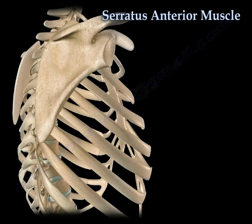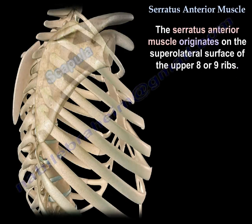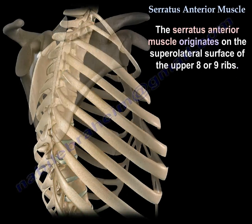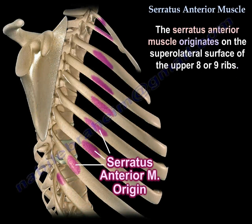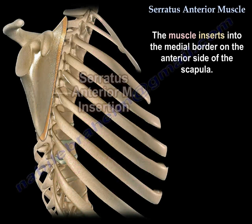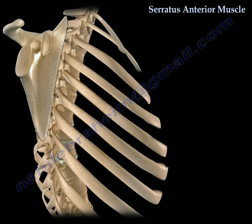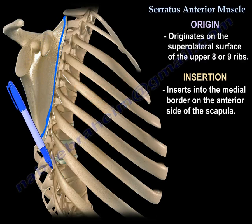The serratus anterior muscle originates on the superior lateral surface of the upper eight or nine ribs. Here you can see the origin of the serratus anterior. The muscle inserts into the medial border on the anterior side of the scapula. Here you can see the insertion and the course of the serratus anterior muscle.